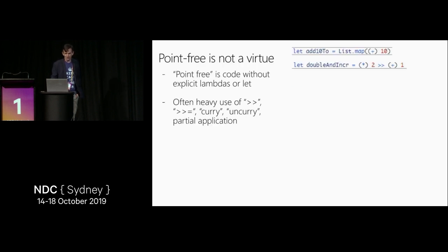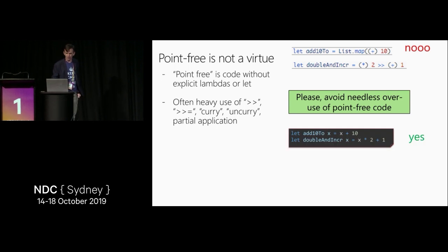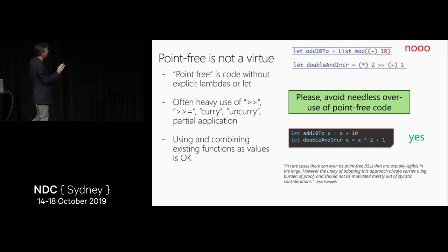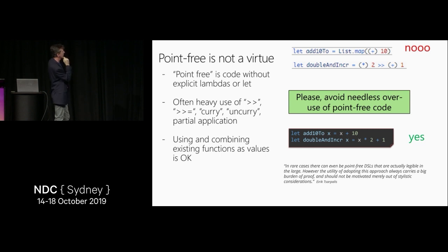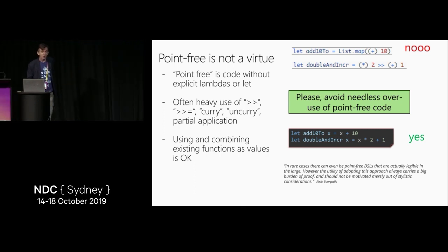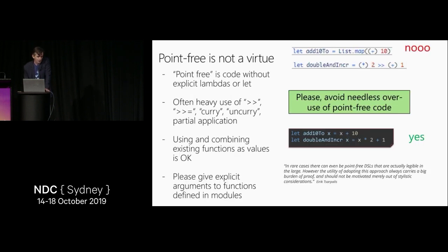The next issue is point-free code. You'll often see people writing things like `List.map ((+) 10)` or composing functions without naming arguments. Just don't write this sort of thing. Avoid needless point-free code and just write out the functions as functions. Eric Sapalis has a great line about this: there are rare cases where point-free DSLs are legible in the large — I actually did show you one of those earlier in the context of web programming. But just adopting this approach carries a big burden of proof. Ask your team member: what is it really bringing value? Please make your code clearer — F-sharp code can be extremely clear and you should write it like that.